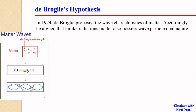De Broglie combined two equations. From Planck's equation we have E = hν, where energy associated with the wave is given as E = hν, where ν is the frequency of the radiation, h is Planck's constant, and E is the energy associated with the wave. Let this be equation 1.